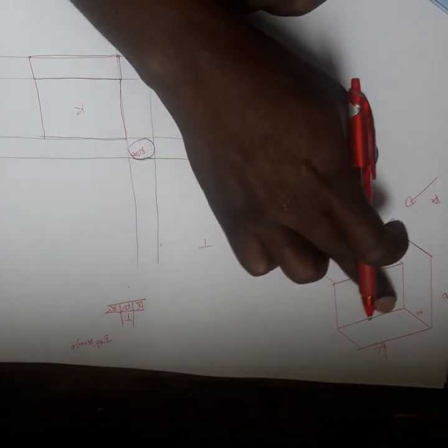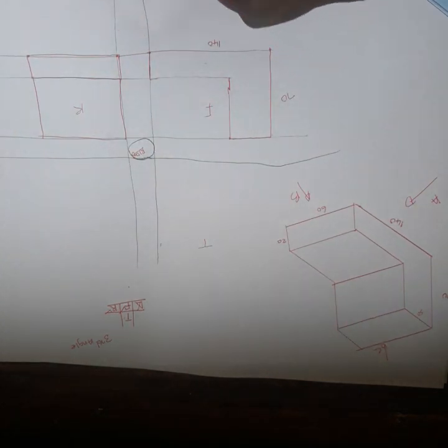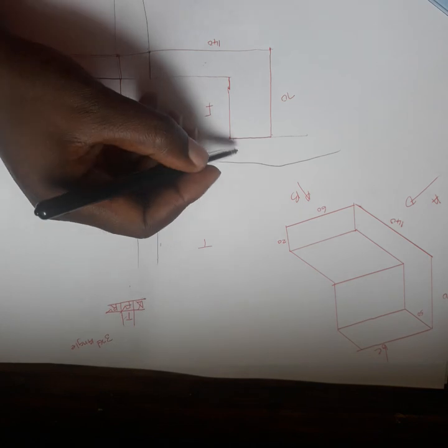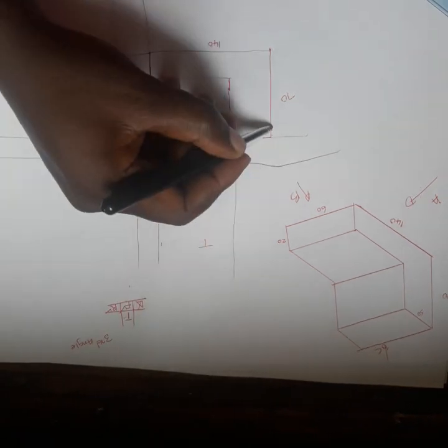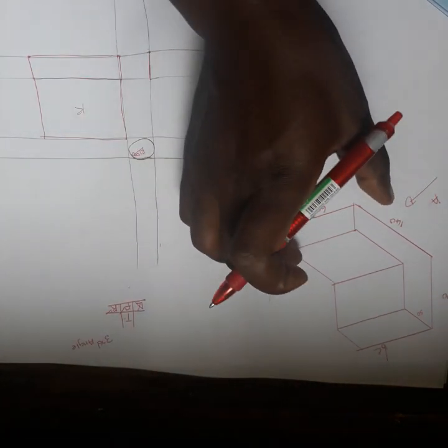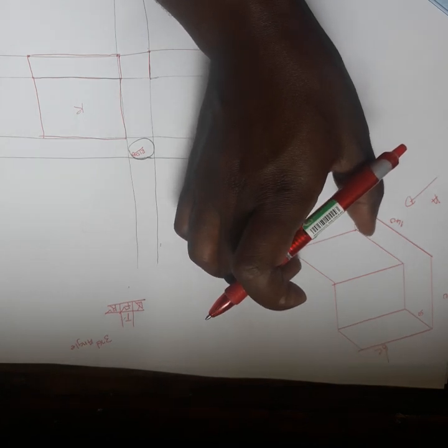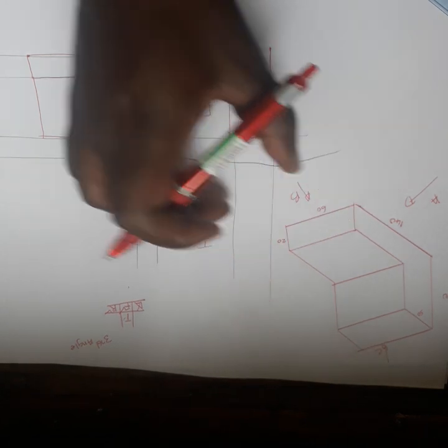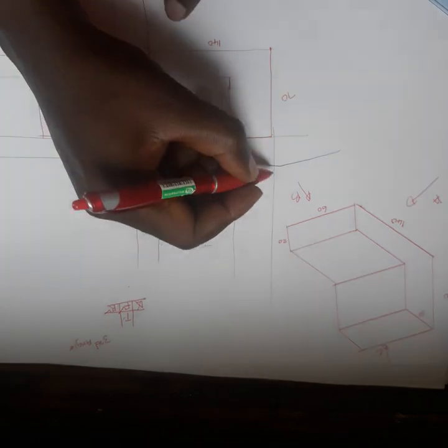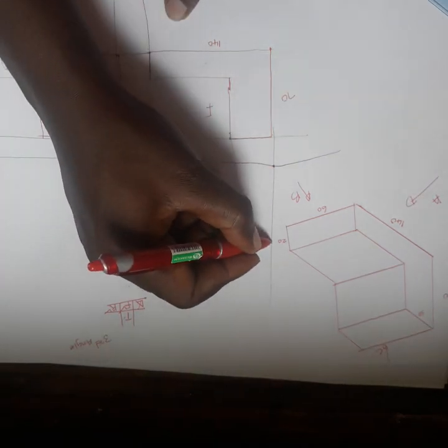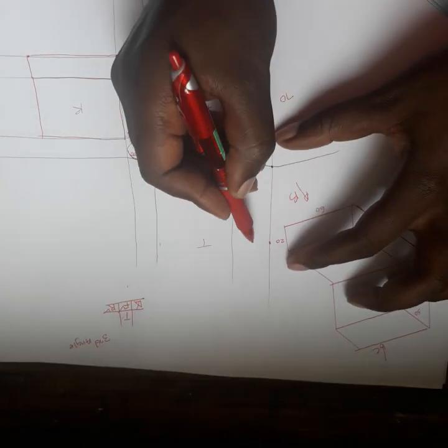For top view, you're also going to project lines here and a project line here. The depth of the top view is the same as this one, so 60. Also from here to here I'm going to measure 60, then I draw the line.